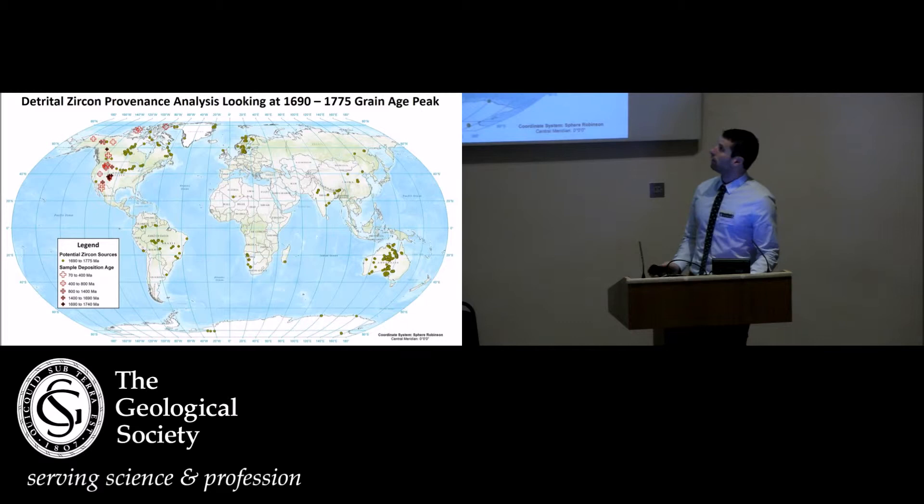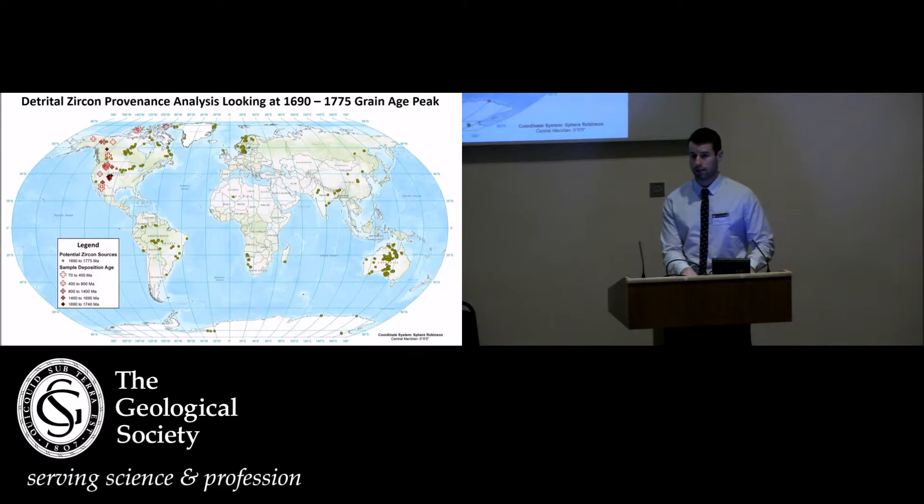For the grain age that I had highlighted, it is 1,690 to 1,775 million years old. I've plotted all the sample locations represented by crosses and varying colors, as well as the potential zircon source locations. For samples that are deposited at nearly the same time as the grain age peak—those deposited between 1690 and 1740—it's possible to infer provenance for those samples. However, you cannot rule out sediment recycling for the younger samples.